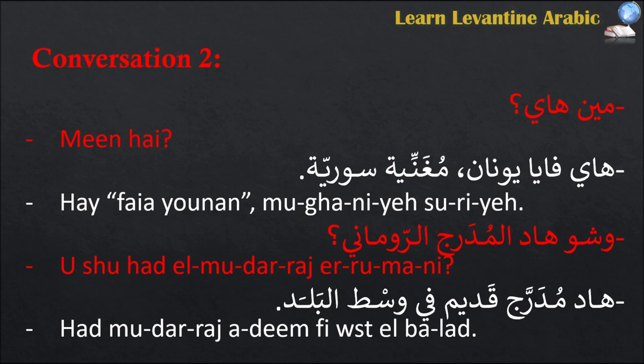Here's conversation two one more time: مين هاي؟ — who is this? هاي فايا يونان، مغنية سورية — this is Faia Younan, a Syrian singer. وشو هاد المدرج الروماني؟ — and what is this Roman amphitheater? هاد مدرج أديم في وسط البلد — it's an old amphitheater downtown.